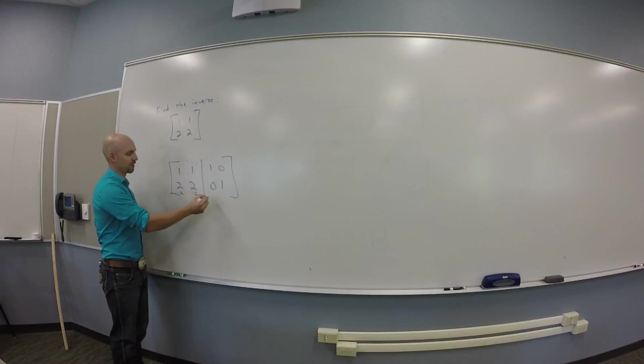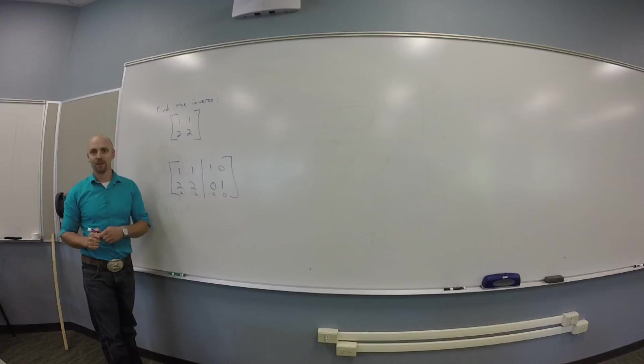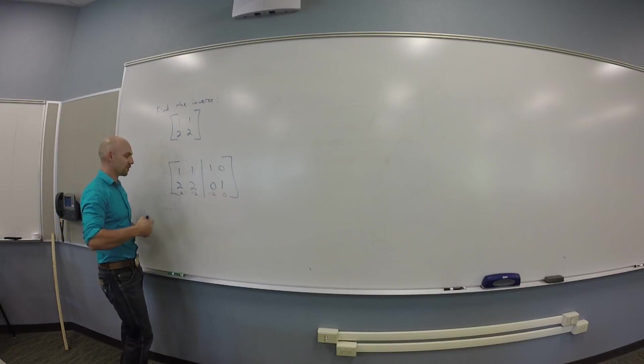Okay. So, I'm going to multiply the top row by negative 2. I'm going to get negative 2, negative 2, negative 2, zero. And then I'm going to rewrite my whole system.